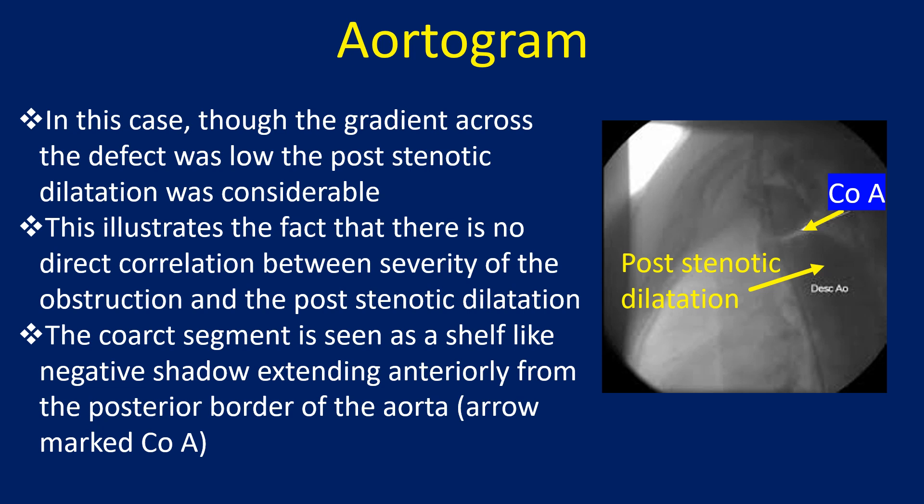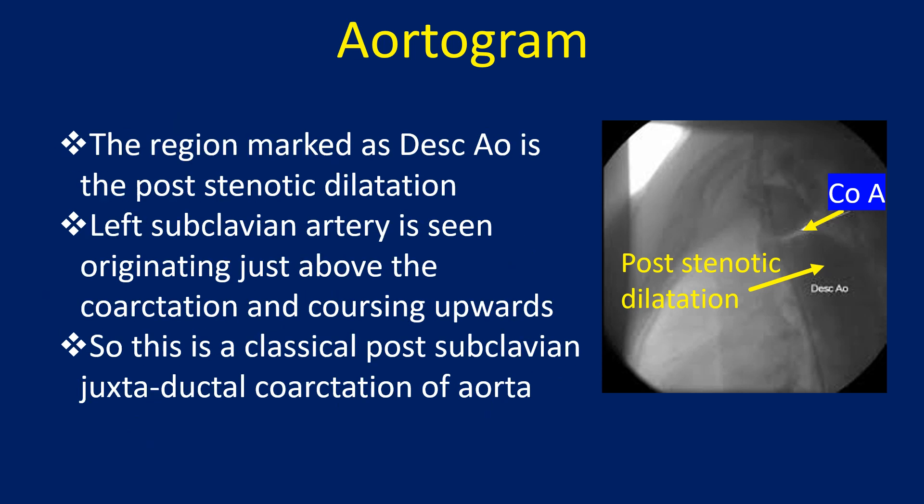In this case, though the gradient across the defect was low, the post-stenotic dilatation was considerable. This illustrates the fact that there is no direct correlation between the severity of the obstruction and the post-stenotic dilatation. The coarct segment is seen as a shelf-like negative shadow extending anteriorly from the posterior border of the aorta, marked by arrow as COA. The region marked as DISIO is the post-stenotic dilatation.